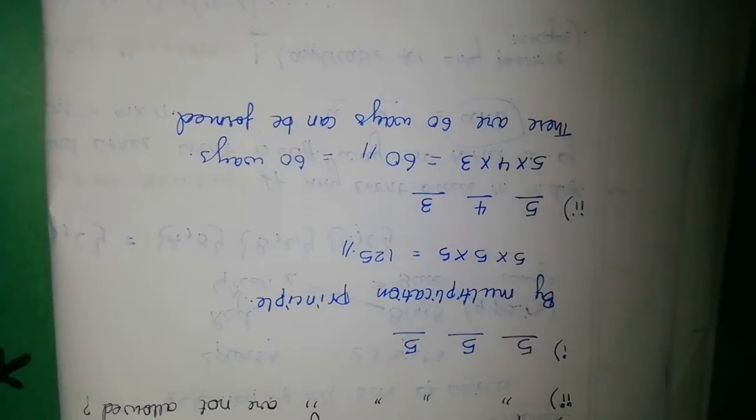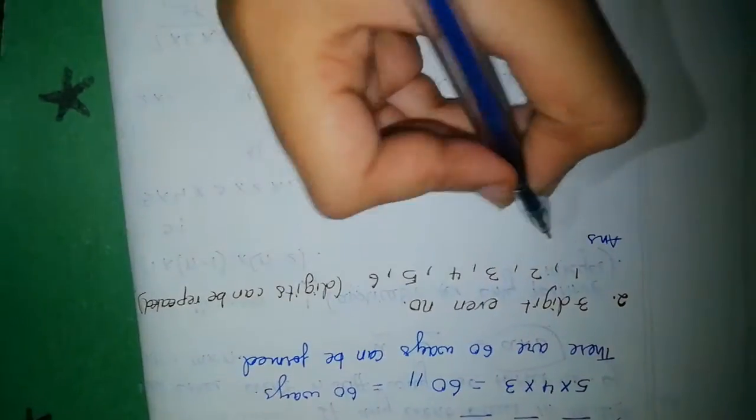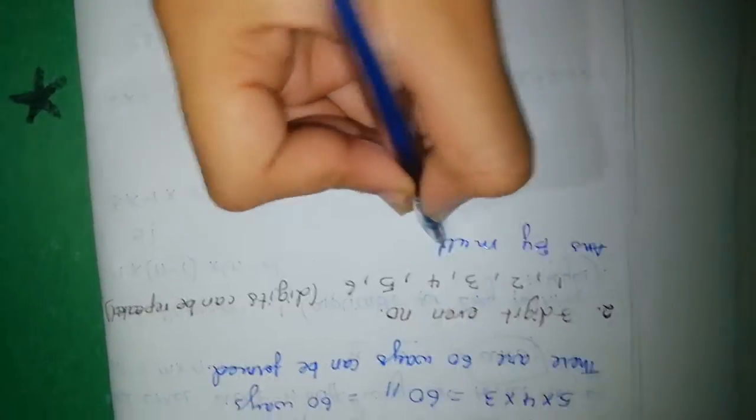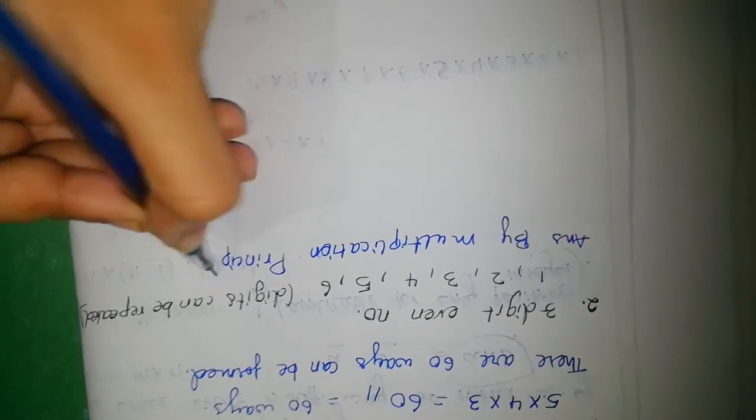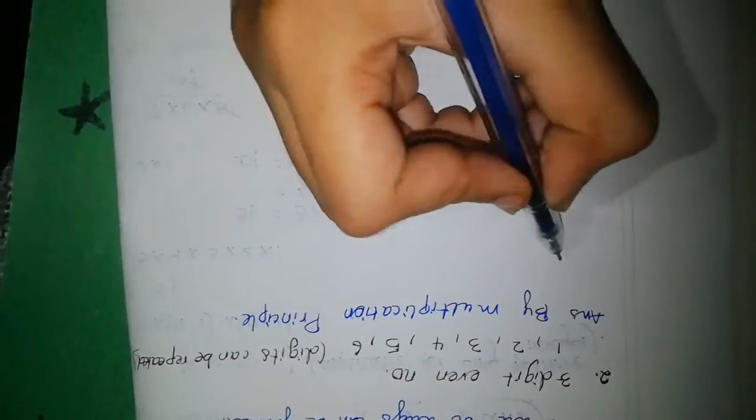The first sum is completed. Next, the second question: how many three-digit even numbers can be formed from the digits 1, 2, 3, 4, 5, 6, if the digits can be repeated? Repetition of the digits is allowed. We solve this by the multiplication principle.